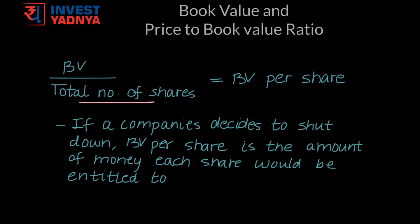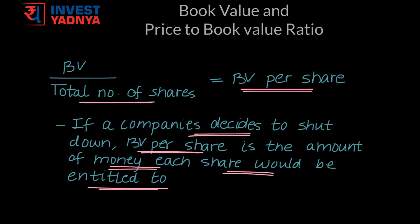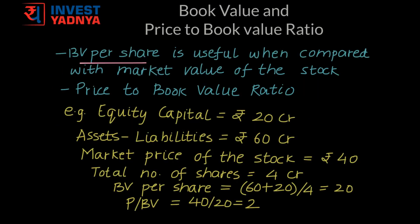Book value divided by total number of shares gives you book value per share of a company. If a company decides to shut down, book value per share is the amount of money each share would be entitled to. Book value per share is useful when you compare it with the market value of the stock via the price to book value ratio, where price is the market cost of the stock and book value is book value per share.